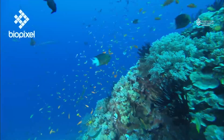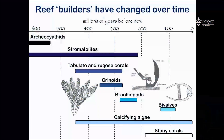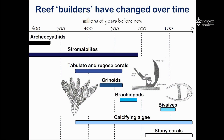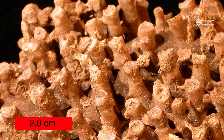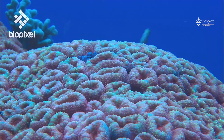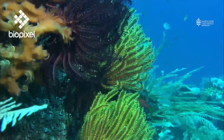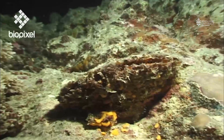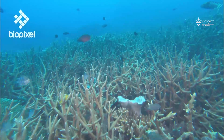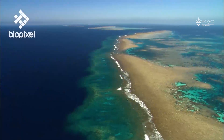The animals that have built reefs have changed over time. Around 600 million years ago, reefs were constructed by archaeocyathid sponges and stromatolites. Around 400 million years ago, new organisms evolved and began to form reefs — these were tabulate and rugose corals, which built a different kind of limestone skeleton than corals that live on reefs today. Other organisms including crinoids, brachiopods, and bivalves also contributed to reef construction hundreds of millions of years ago. It's only in the last 175 to 200 million years that stony corals — the animals that build modern reefs — have taken over as the major constructors of coral reefs.